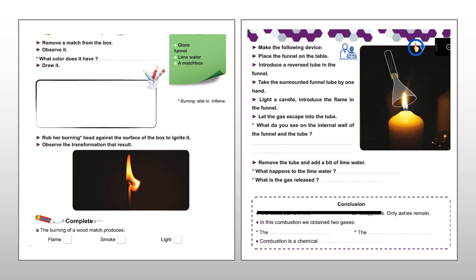Now students, open your books on pages 140 and 141 in order to start solving the exercises on the book. Remove a match from the box. Observe it. What color does it have? Of course, it has a yellow to orange color.